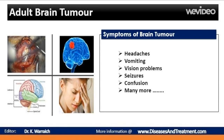Symptoms of brain tumors depend on the location and size of the tumor. Some tumors cause direct damage by invading brain tissue, and some tumors cause pressure on the surrounding brain. You'll have noticeable symptoms when a growing tumor is putting pressure on your brain tissue. Headaches are a common symptom of a brain tumor. You may experience headaches that are worse in the morning when waking up, occur while you're sleeping, or are made worse by coughing, sneezing, or exercise.